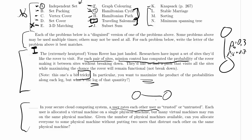To me this feels more like an unweighted graph, but let's reserve judgment until we keep going. Each user is allocated a virtual machine on a single physical machine, but many virtual machines may run on the same physical machine.